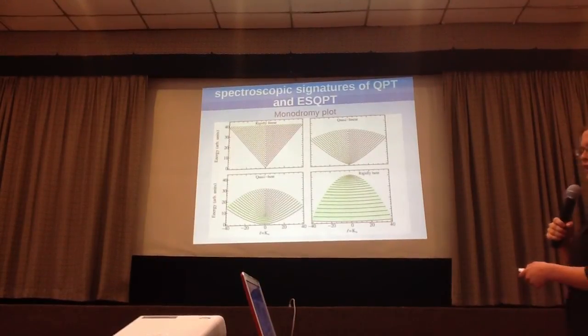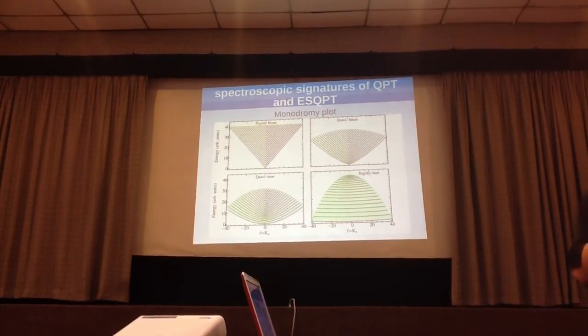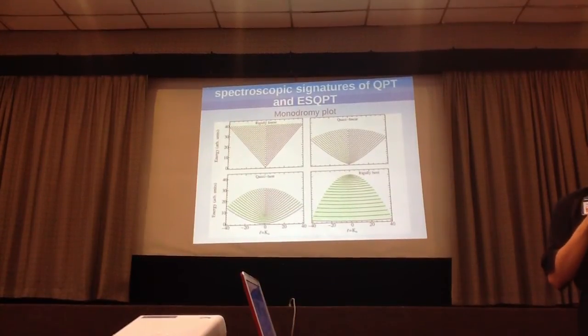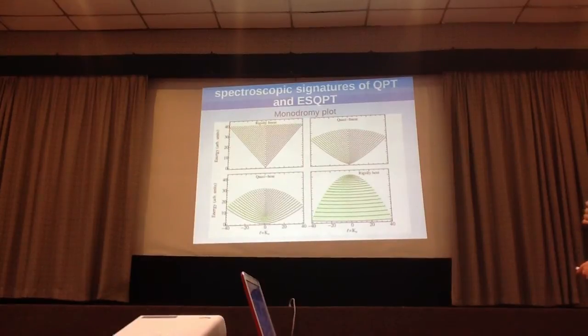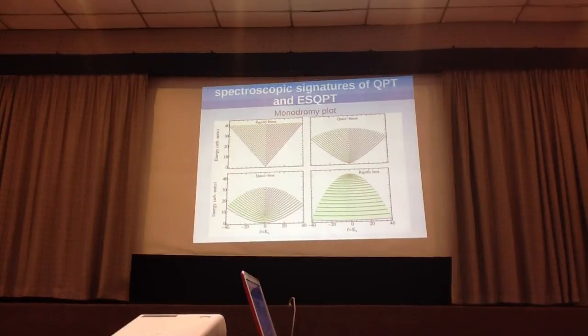Another thing we can look for is the boundary plot. This is a plot of the energy levels themselves as a function of angular momentum on the river. For a rigidly-linear molecule, we're going to look at the behavior around the origin. What you see here is linear. For quasi-linear, you see a little bit of softening at the lowest levels.